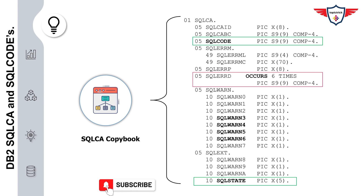The next important variable is SQLERRD. This is an array that includes six different values that can be used to diagnose an error condition. While writing a COBOL DB2 program, SQLERRD(3) is commonly used to understand the number of rows impacted by executing an SQL statement — for example, the number of rows inserted, deleted, or updated.